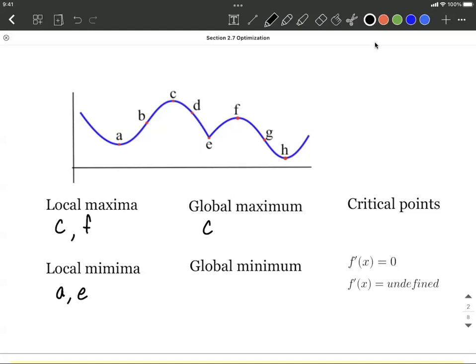G is kind of in the middle, not the highest or the lowest in that section. H appears to be a lowest point, so it's going to go as a minima. It also appears to be the very lowest point on the entire graph, so I'm going to classify it as the global minimum.